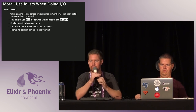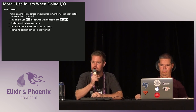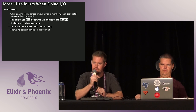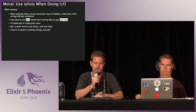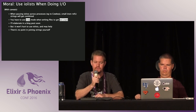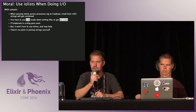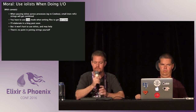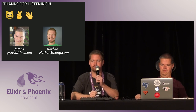The moral of this is: when you're doing I/O, use IO lists. There are several caveats — there's more detail to cover in a blog post on the Big Nerd Ranch blog, so check that out. When passing IO lists across processes, small non-ref-counted binaries are going to get combined. When writing to a file, you need raw mode to take advantage of `writev`. But the main takeaway is: if you're doing I/O, use IO lists. It's not going to hurt you, and it may help — there's no point in joining those strings yourself. Thanks for listening.